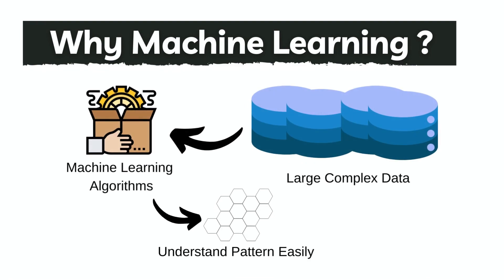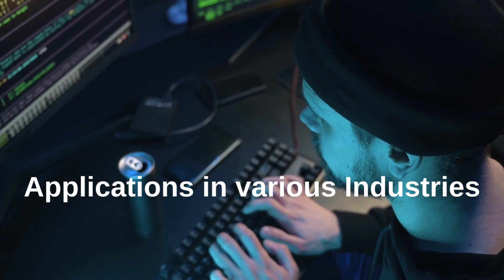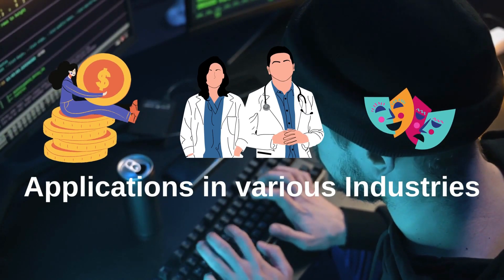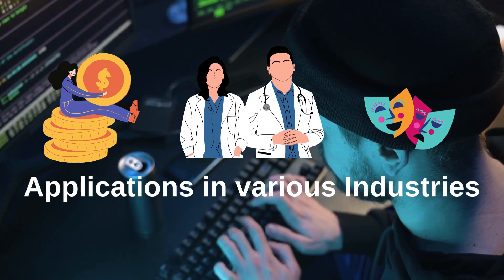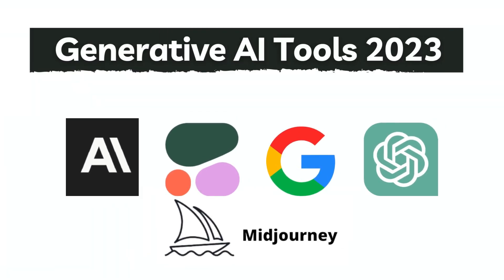We use machine learning algorithms because they have the ability to analyze vast amounts of data that humans can't process alone effectively. Machine learning has immense applications in various industries, from finance to healthcare to marketing and entertainment. It's used for personalized recommendations, fraud detection, autonomous vehicles like Tesla, medical diagnosis, and even creating works of art like generative AI.